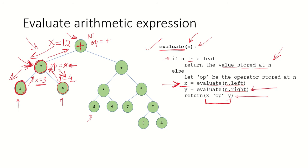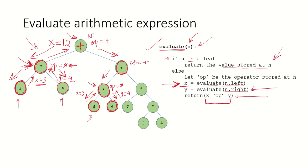For node n1, the left subtree has been evaluated and the value 12 is received in x. Now we evaluate the right subtree of node n1. We come to this node where the operator is a plus operator. We recursively call evaluate on its left subtree, reaching a node where the operator is multiply. We evaluate that node's left subtree — leaf node returns x=3 — and right subtree — leaf node returns y=4. Multiplication gives 12, returned and collected in x.